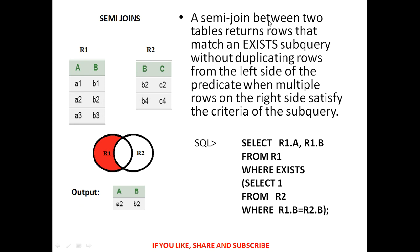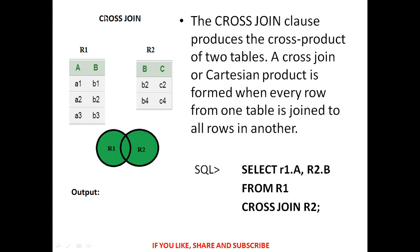Semi join: a semi join between two tables returns rows that match an EXISTS subquery without duplicating rows from the left side of the predicate when multiple rows on the right side satisfy the criteria. The SQL query is: SELECT R1.A, R2.B FROM R1 WHERE EXISTS (SELECT 1 FROM R2 WHERE R1.B = R2.B). This indicates which attribute is common, shown by red color.